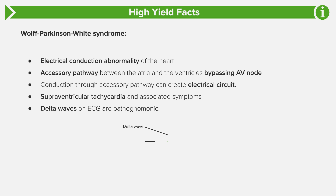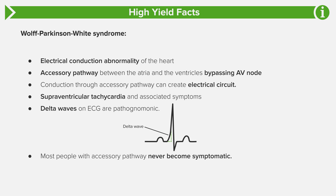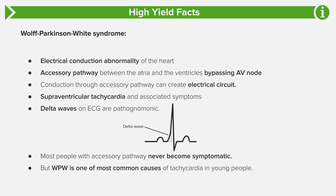Delta waves on EKG are pathognomonic for WPW, or Wolff-Parkinson-White syndrome. Although most people with the accessory pathway never show symptoms, WPW is one of the most common causes of tachycardia in young patients.